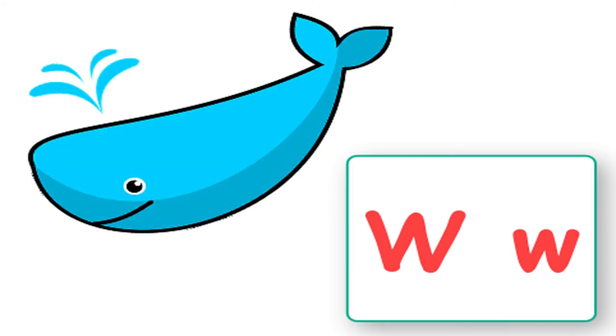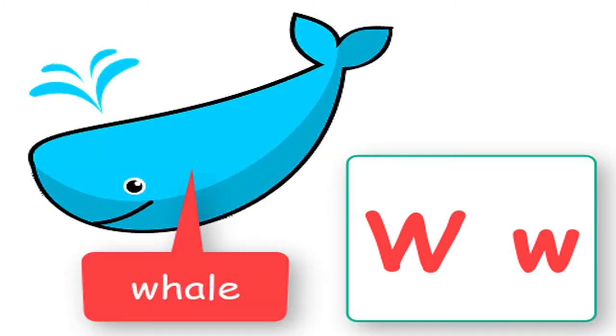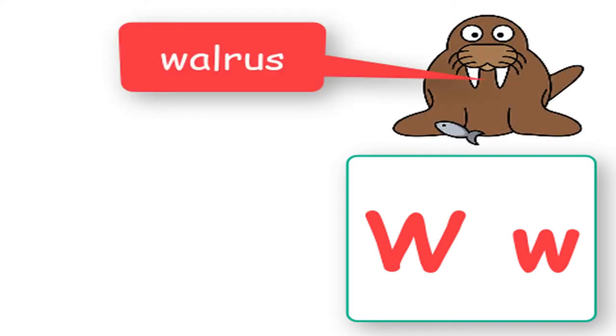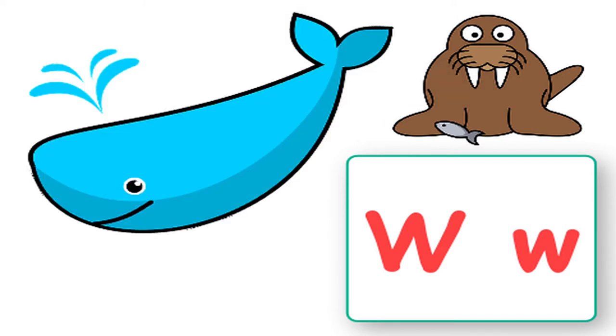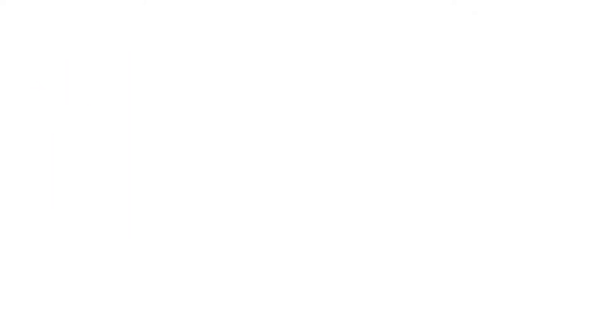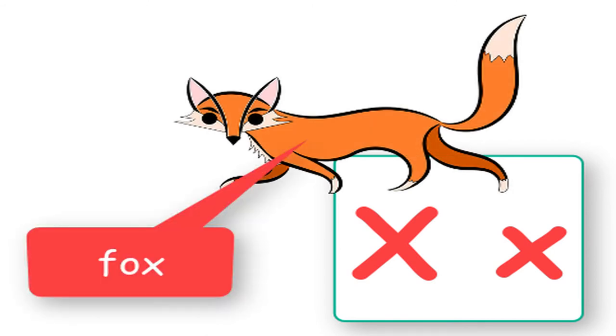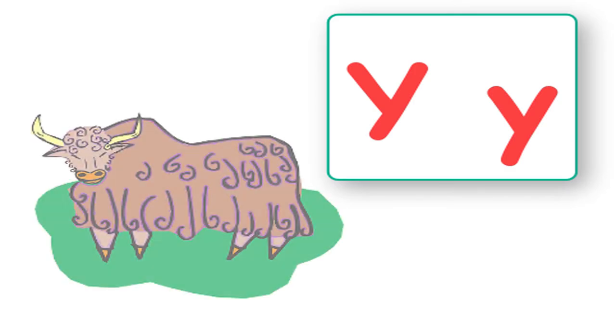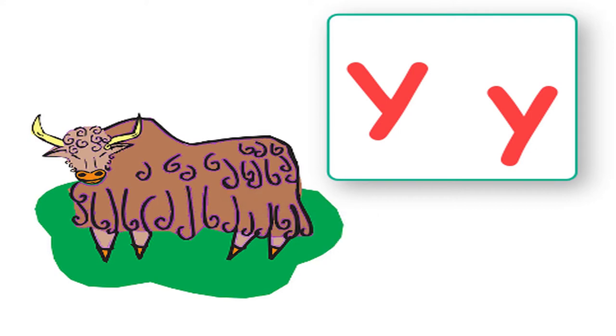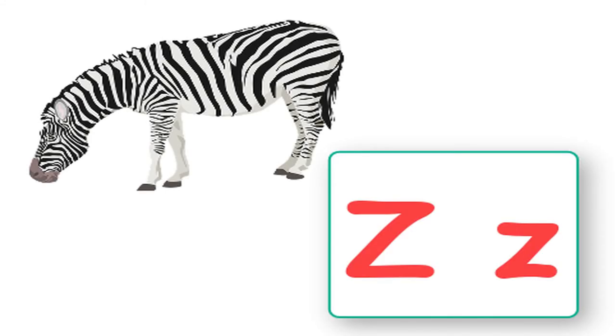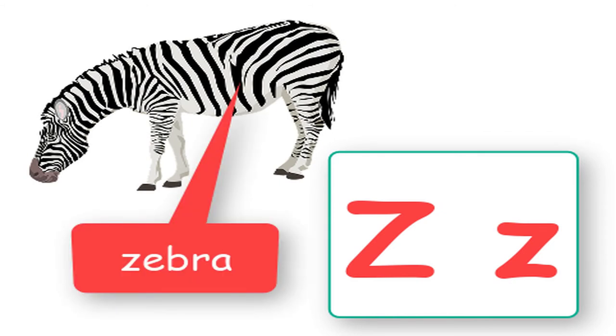W is for whale, whale. W is for walrus, walrus. X is for fox, fox. X is for fox, fox. Y is for yak, yak, yak. A kind of hairy cow. Z says zebra, zebra.